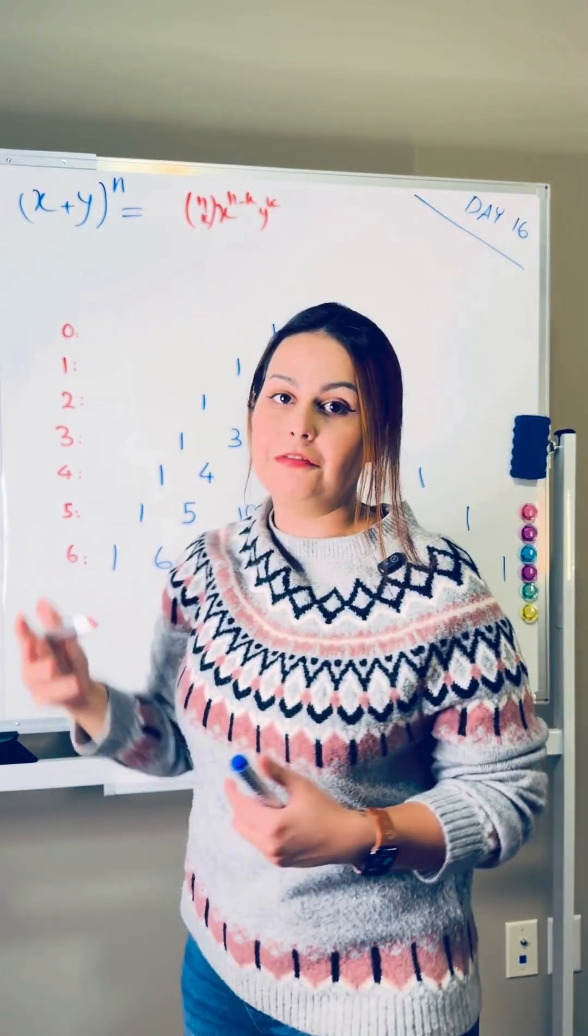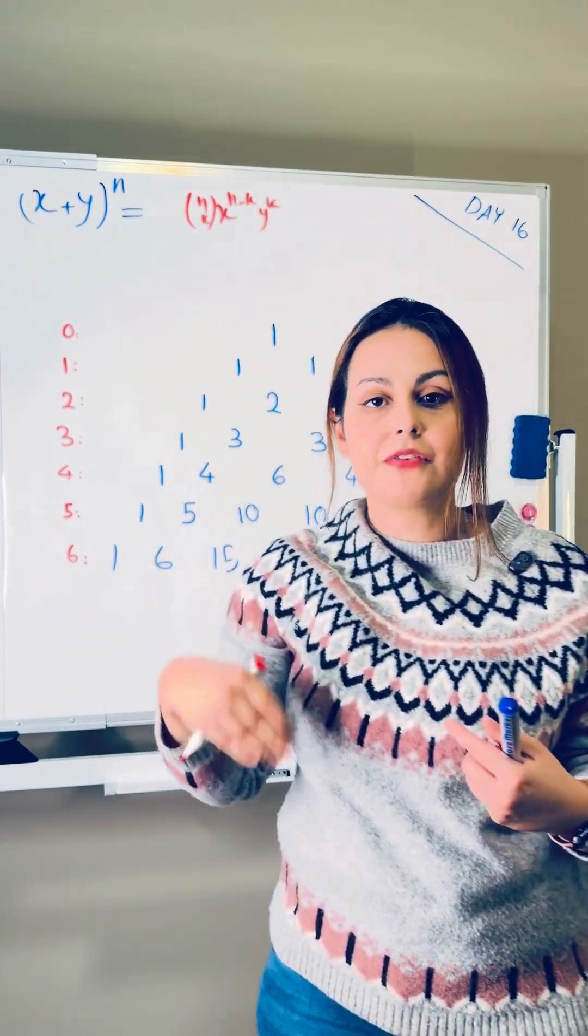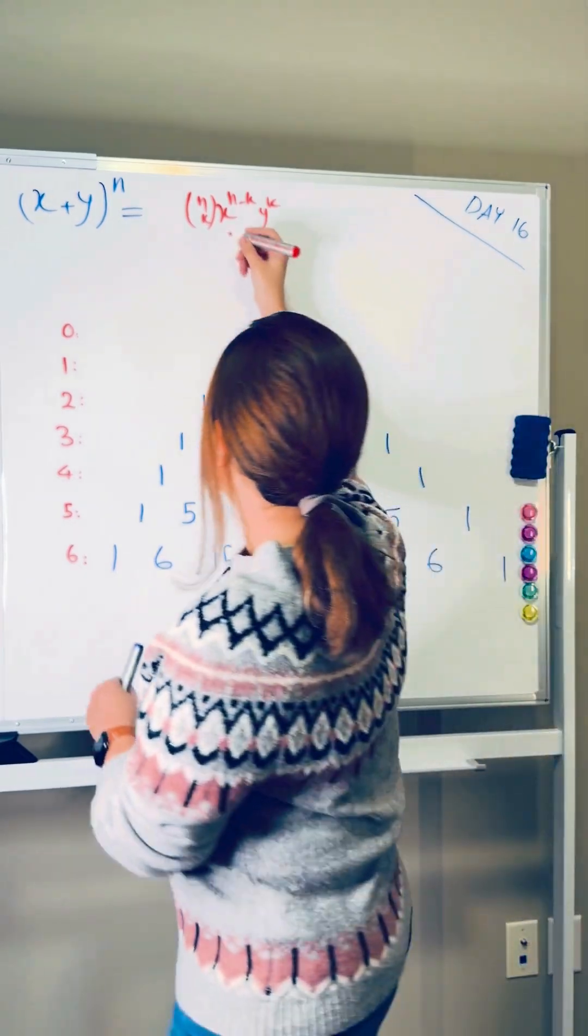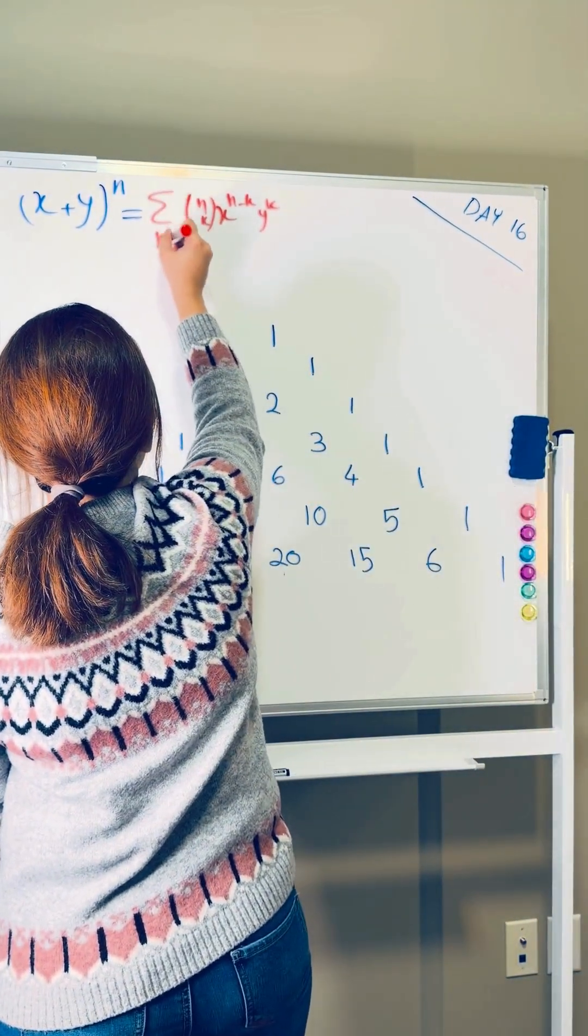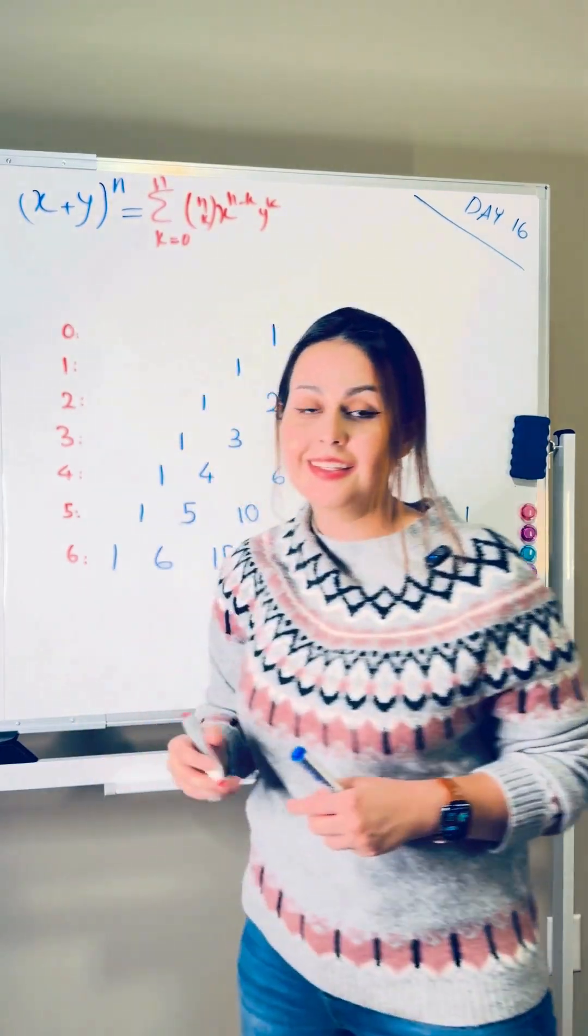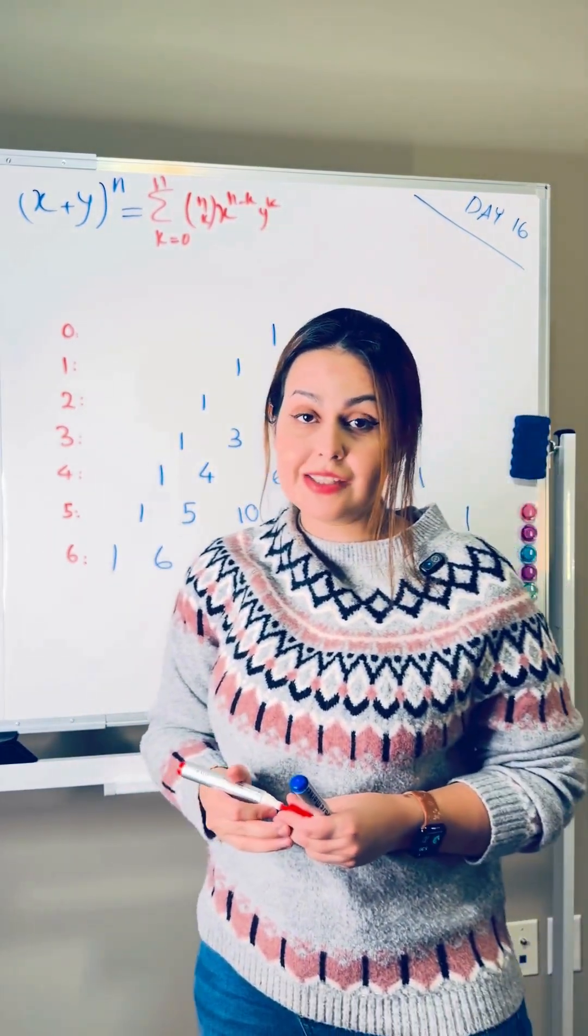And because I need all of these coefficients times x to the power of something, y to the power of something, I need to take a sigma from 0 to n for k. So now I want to add something to that.